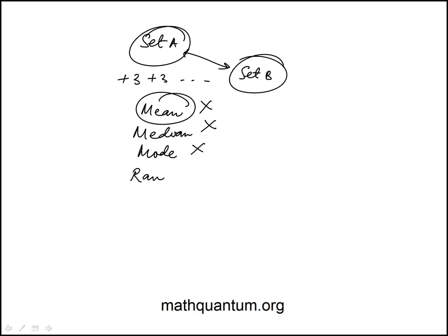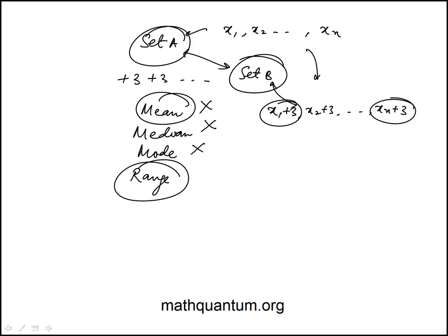And range is the one that would remain the same, because if the elements are x1, x2, xn, and I add 3 to each one of those, in set B there would be x1 plus 3, x2 plus 3, all the way to xn plus 3, and the range is the difference between the largest and the least. And since they're both being increased by 3, the difference remains the same. So the range would be the same. Answer choice D.